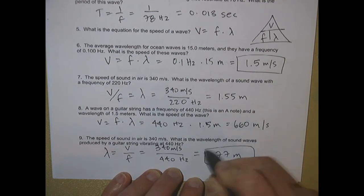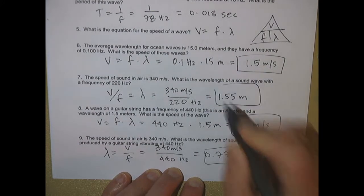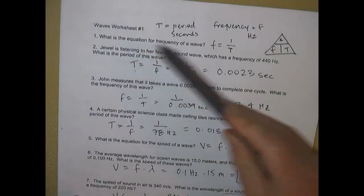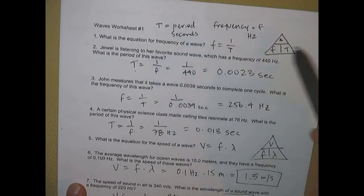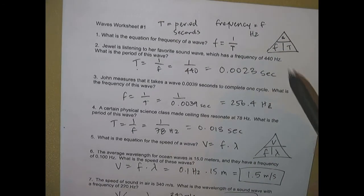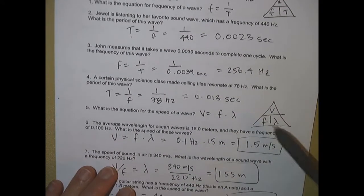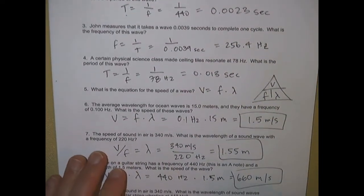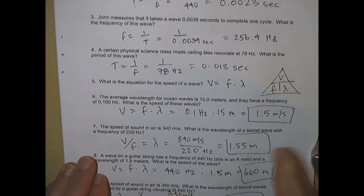So you've got two different equations: frequency equals one over the period, and velocity of a wave equals frequency times wavelength. You can use the two triangles to solve those kinds of problems.